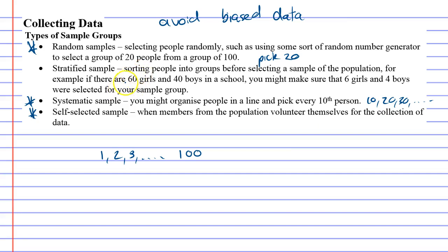And the last one is called a stratified sample. This one involves sorting people into groups. So imagine here we've got our 100 people and we found out that 60 of them were girls and 40 were boys. So we've already sorted them into two groups, girls and boys.